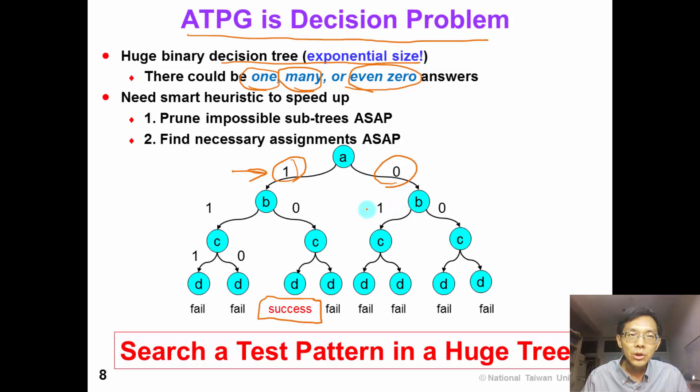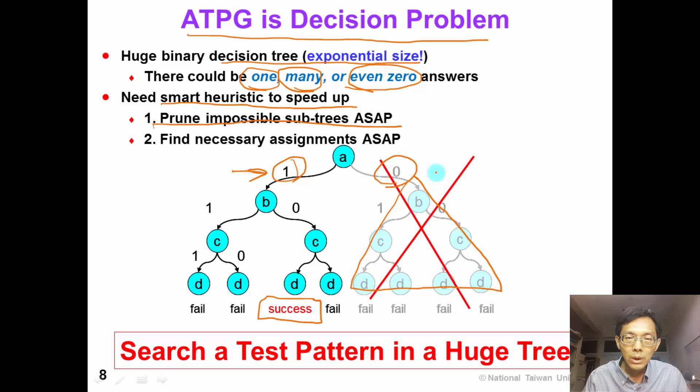So ATPG needs smart heuristics to speed up the process. Basically, there are 2 methods. The first method is to prune impossible subtrees as soon as possible. For example, in this search tree, we can see that there is no solution in the right subtree. So we can simply prune the right subtree. If we can do it as soon as possible, we can save a lot of search time.